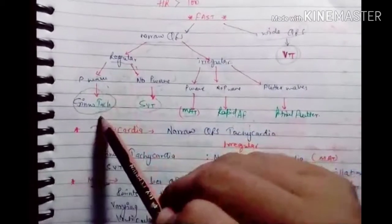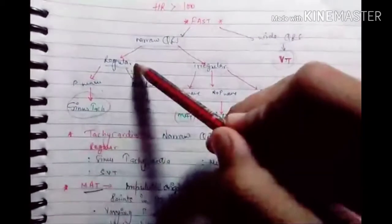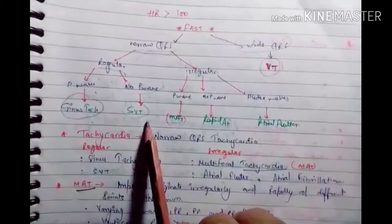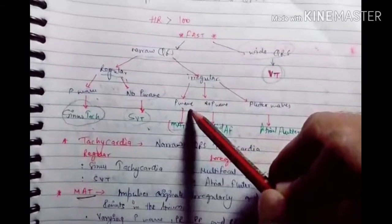If it's regular with P waves we consider sinus tachycardia. If there is no P wave, we consider supraventricular tachycardia. In irregularity, if there is a P wave...